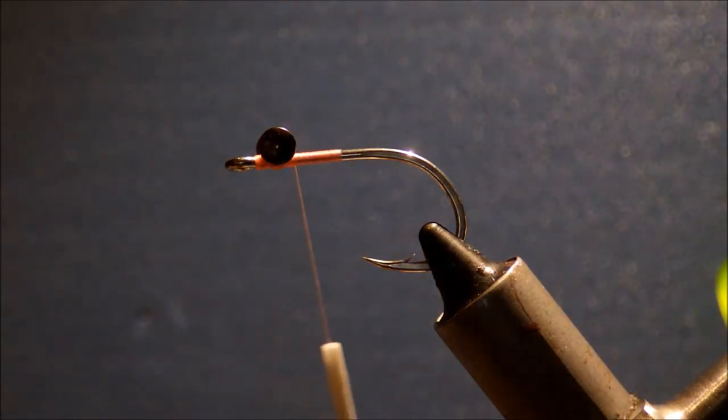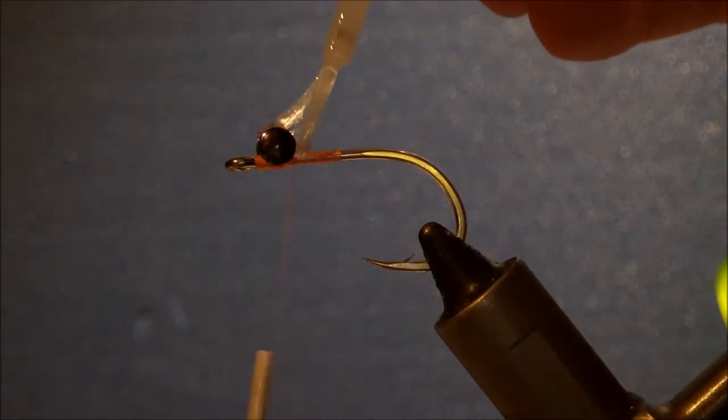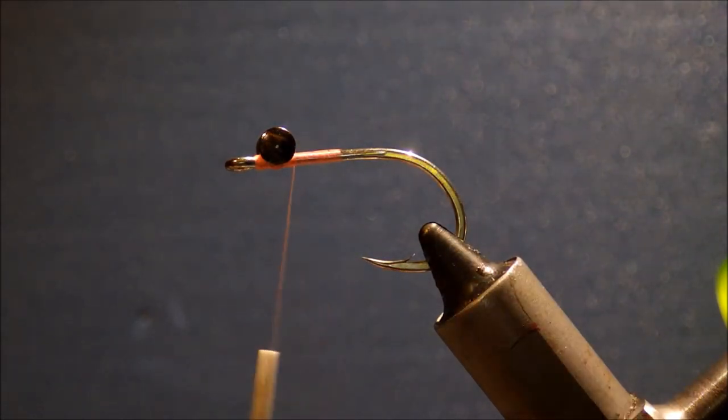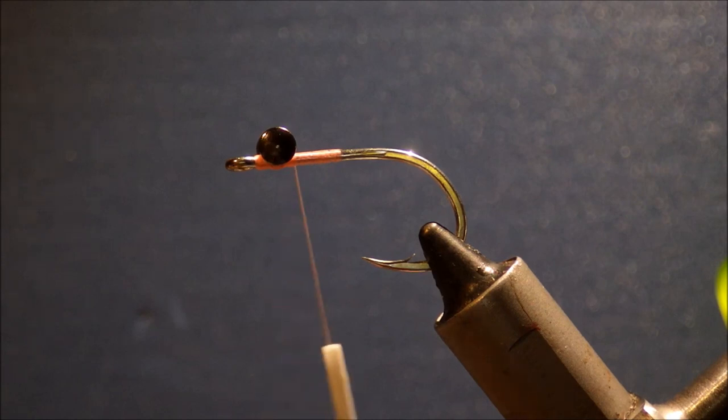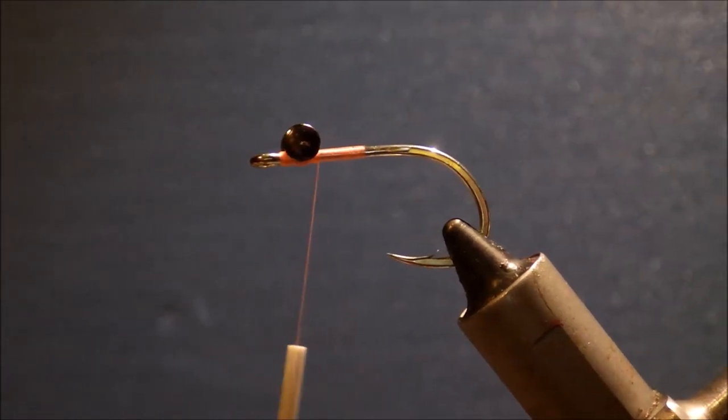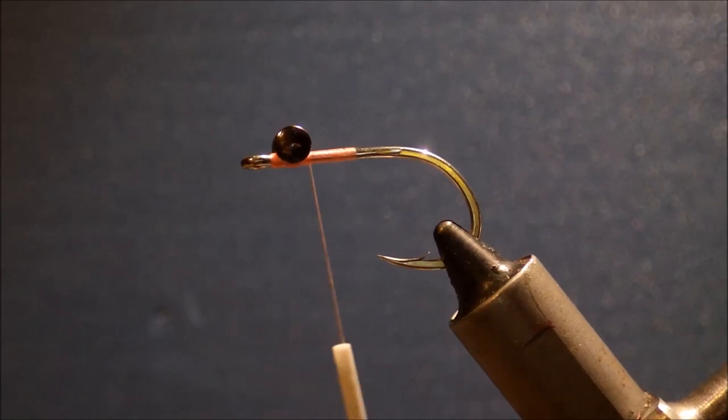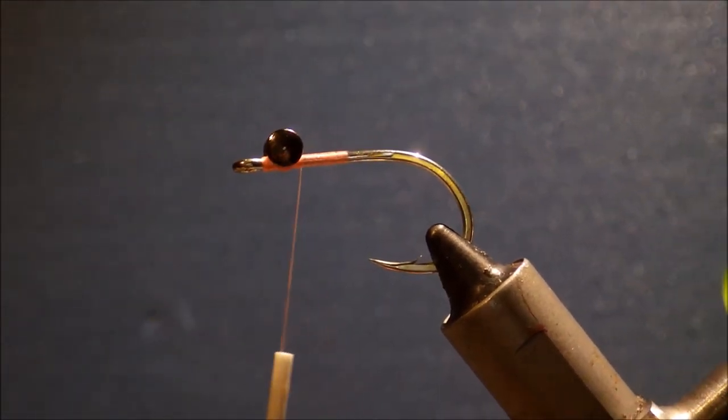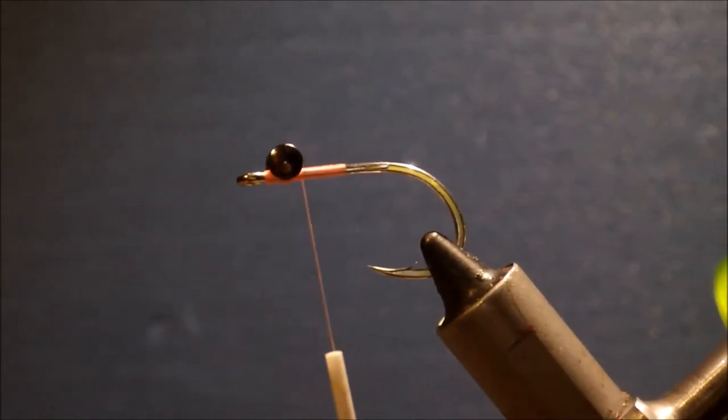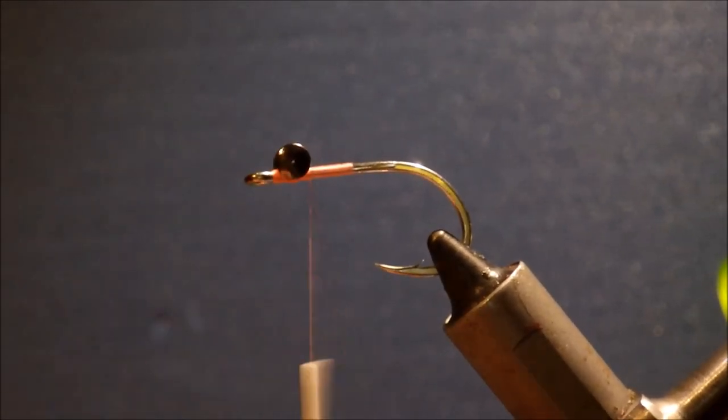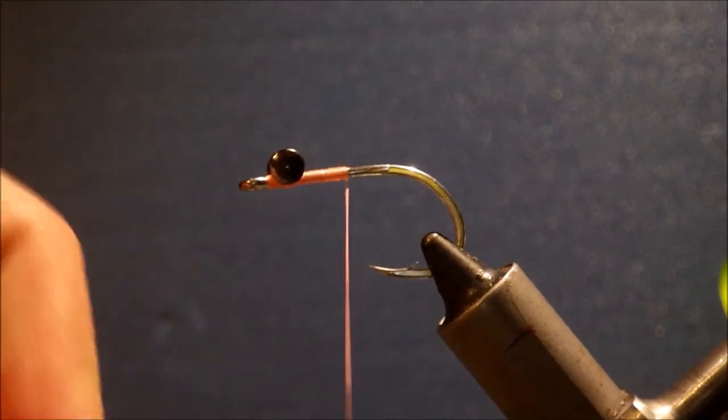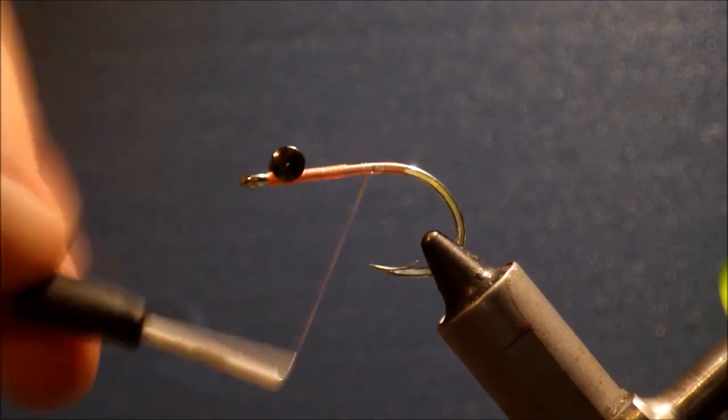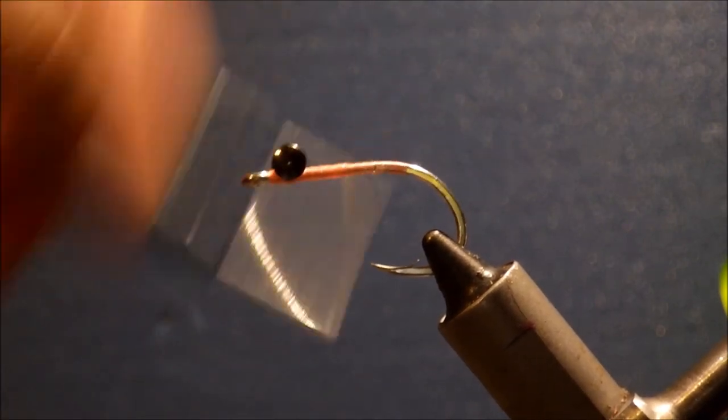And just to be sure, stick on some bit of super glue. And I'll run it right in the shank so that everyone's got a right good grip. The camera was a bit tight to the vise there. And just make sure I've got a nice base of thread to tie on.